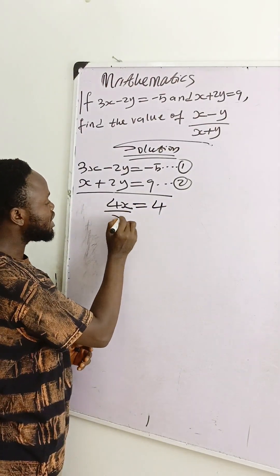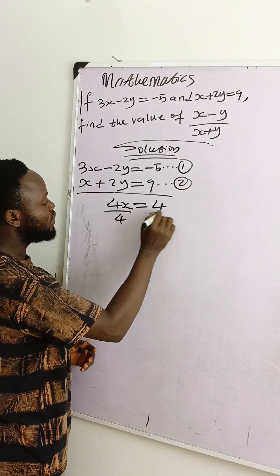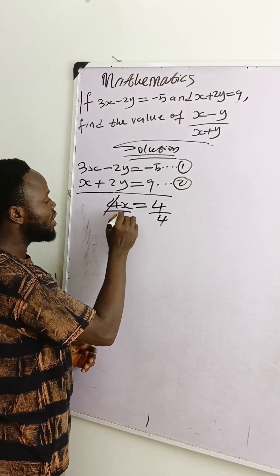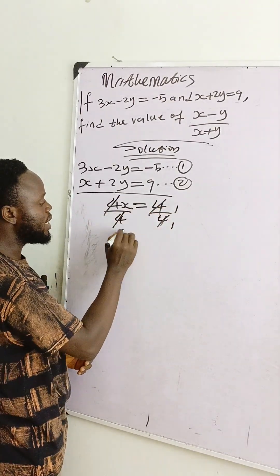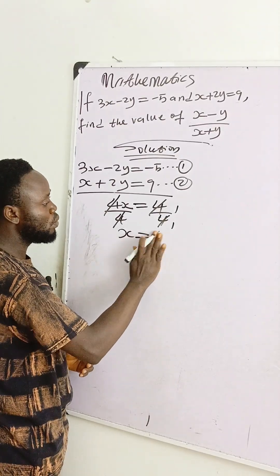Then we divide both sides by 4. Divide this 1 by 4 so that we have something of this nature. Then our x is equal to 1.